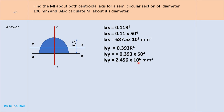For MI about diameter AB: since this axis is perpendicular to the diameter, I_AB = Iyy = 2.456 × 10⁶ mm⁴. You already calculated Iyy, so directly state I_AB = Iyy and read the answer. This is how you solve this problem.